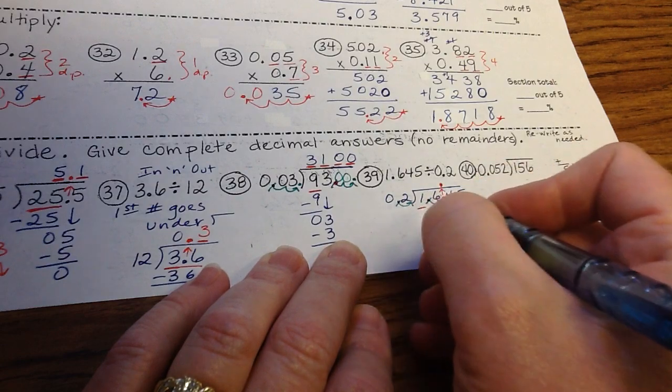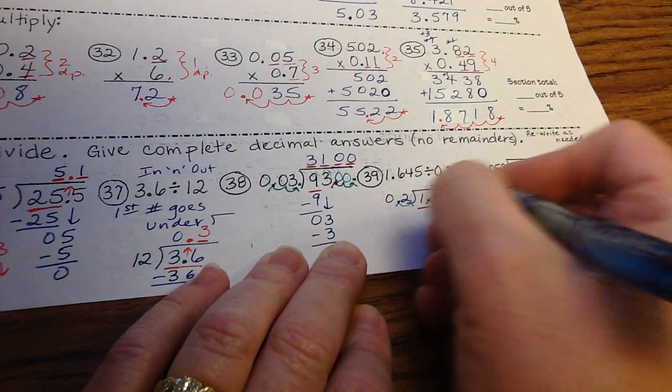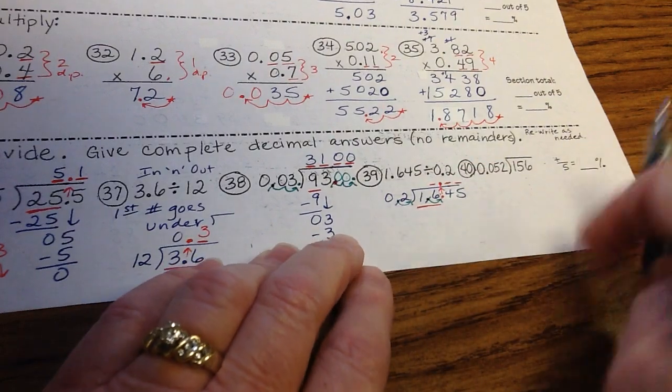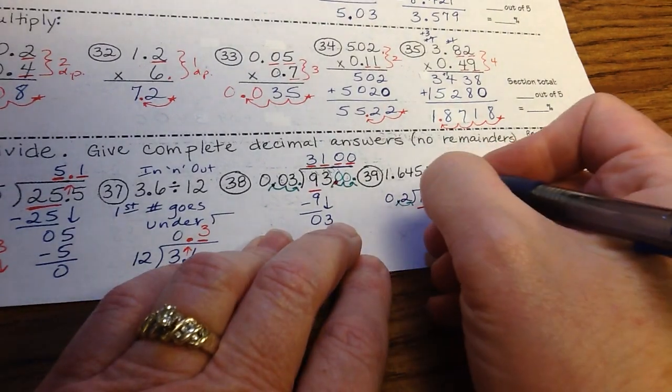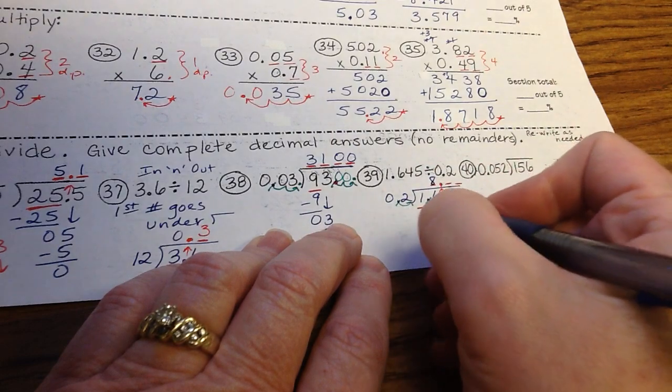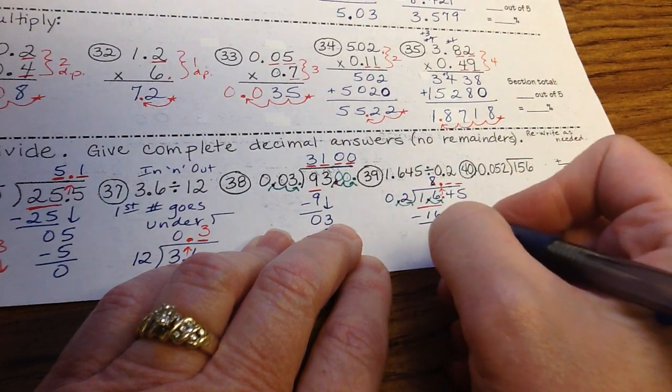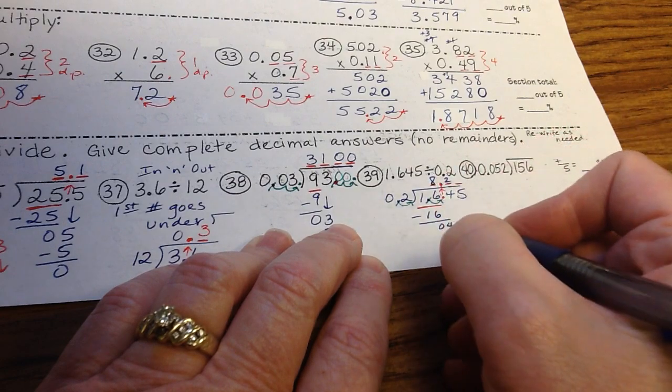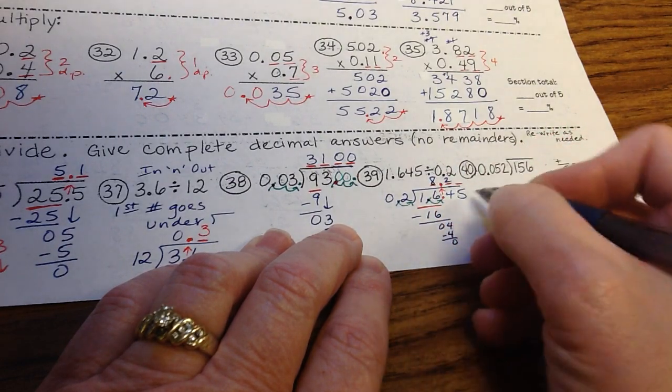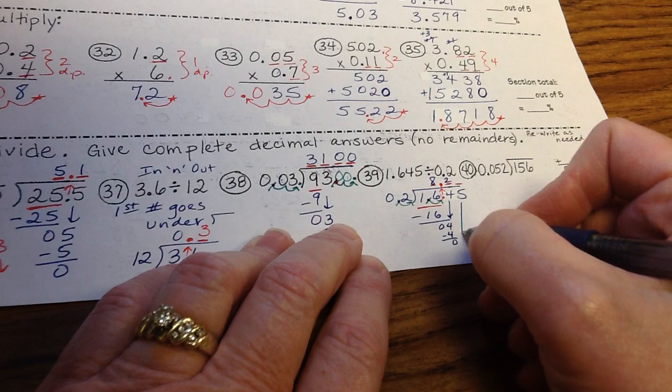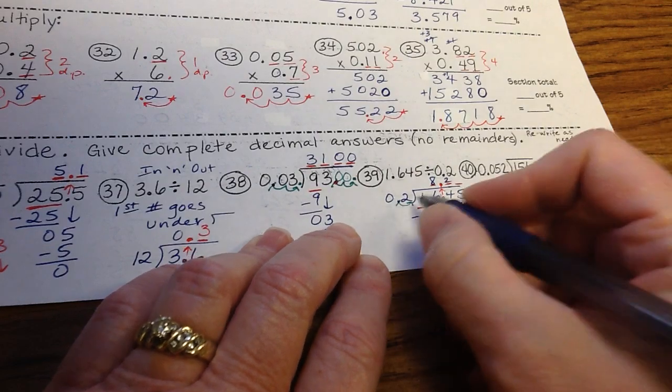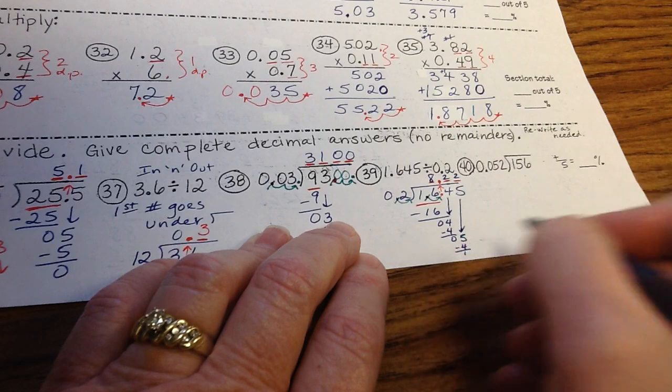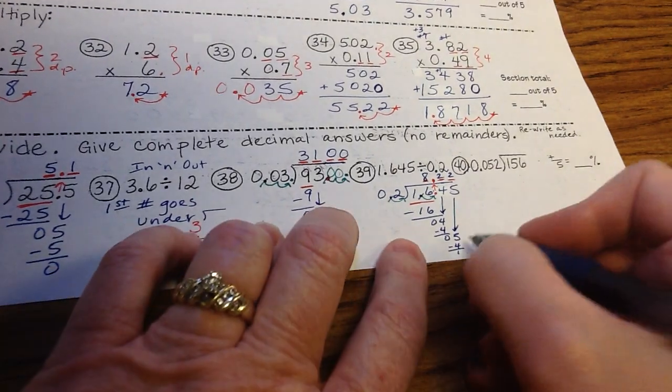Now, does 2 go into 1? No. 16? Yes. We have a digit here, a digit here, and a digit here. Does 2 go into 16? Yes, how many times? 8. 8 times 2 is 16. Subtract, get 0, bring down the 4. 2 goes into 4, 2 times. Subtract, you get 0, bring down, oops, I forgot the arrow. Bring down the 5. 2 goes into 5, 2 times. Uh-oh, we have leftovers.